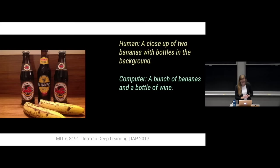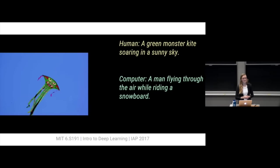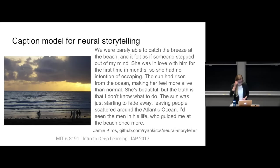They don't all work super well. Here you see it predicts a bottle of wine instead of bottles of beer. Here you've got a cat in a car — maybe the cat was supposed to be black, not the car. And for one image the computer says 'a man flying through the air while riding a snowboard,' so there's still improvement to be made, but sometimes they make funny pictures with funny captions.